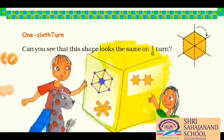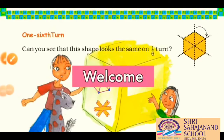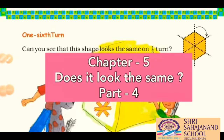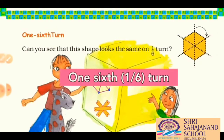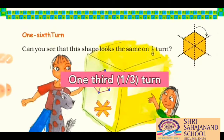Hello students, and welcome to this class video. This is the fourth part of the fifth chapter of Class 5 subject Mathematics. Let's start the class now. We have only two topics for today's class: the first one is one-sixth turn, and the second one is one-third turn.